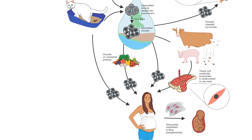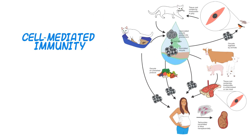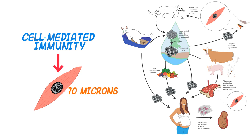Immunocompetent animals use cell-mediated immunity to manage the infection, leading to the bradyzoite stage, or tissue cysts, which may remain viable for years. At 70 microns, these cysts can be seen with a light microscope.